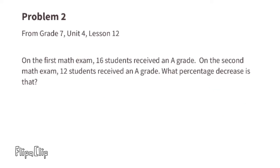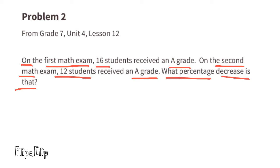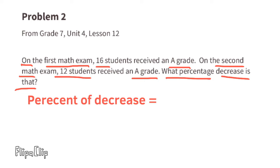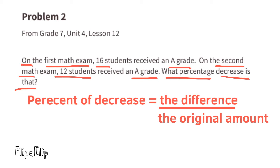Problem number two, from 7th grade Unit 4 Lesson 12. On the first math exam, 16 students received an A grade. On the second math exam, 12 students received an A grade. What percentage decrease is that? The percent of decrease equals the difference divided by the original amount.